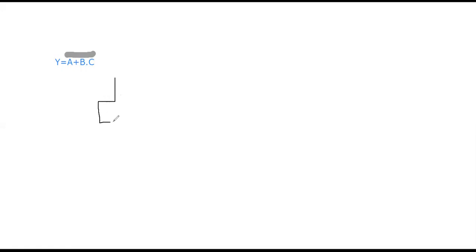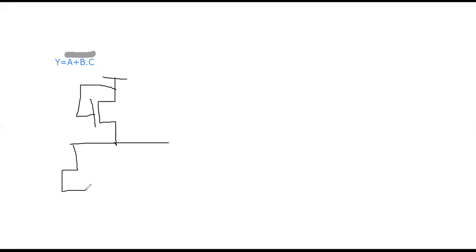So now what we will do is first draw the pull-up transistor with NMOS. Let us draw the transistors: first the A transistor. A is in parallel, and B and C are in series connection.